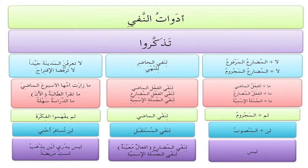ما مع الفعل المضارع is quite unique and rare in its usage, but it is used to negate the present tense — actually a progressive present. ما تقرأ الطالبة means 'the student is not reading now.'